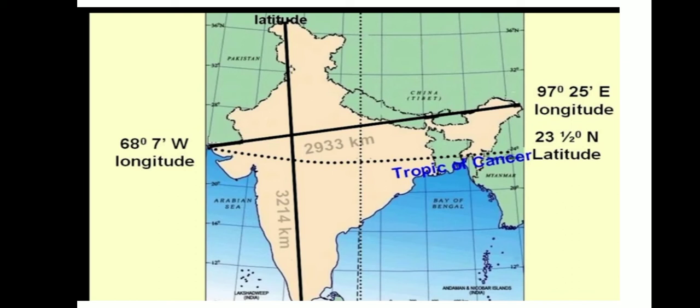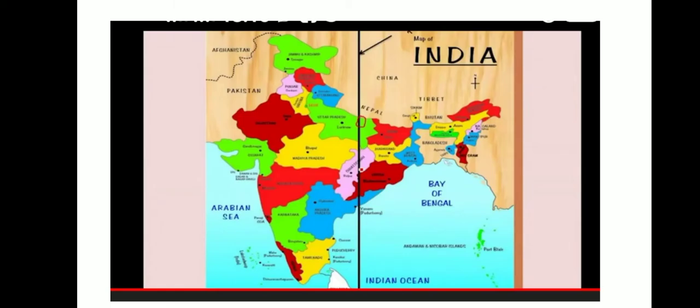The 82.5 degree meridian is adopted as a standard time called Indian Standard Time (IST) for the whole country. This meridian passes through Mirzapur near Allahabad and more or less divides India into two halves.